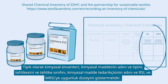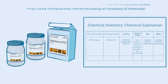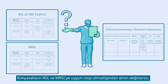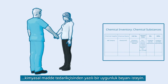The inventory should also indicate the level of conformance to RSL and MRSL. The shown inventory is strongly simplified. For an example of an actual inventory, check the inventory format recommended by the Partnership for Sustainable Textiles. If you are unsure whether the chemicals conform to the RSL and MRSL, request a written conformity declaration from the chemical supplier.